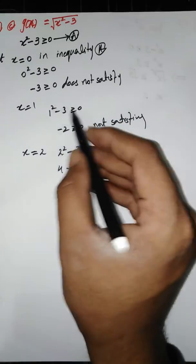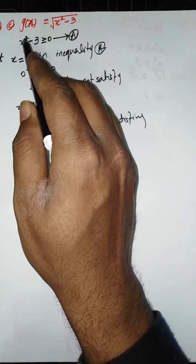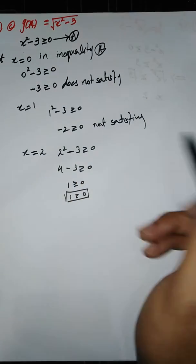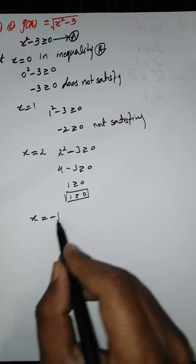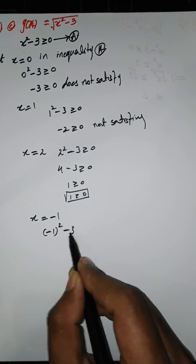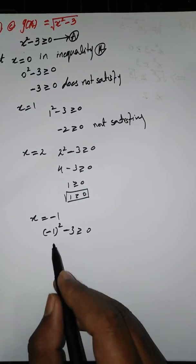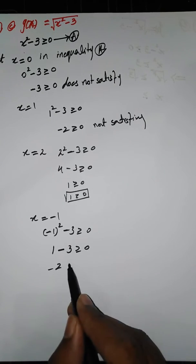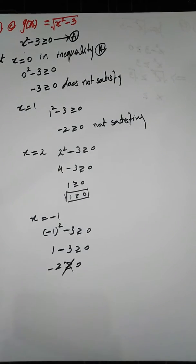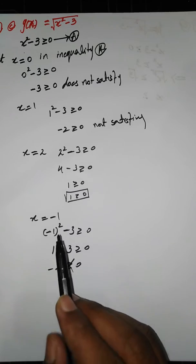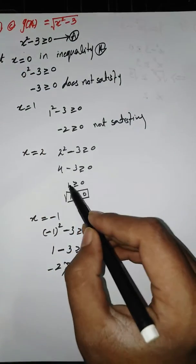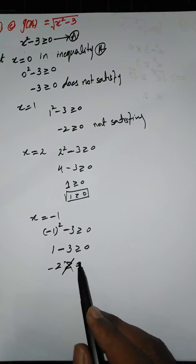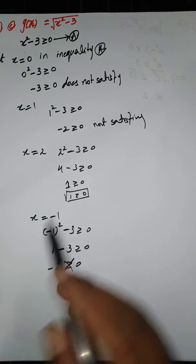Similarly, when we put X equals minus 1, the term becomes 1 minus 3, which equals minus 2, and minus 2 is not greater than 0, so it does not hold. When we put X equals minus 2, the square makes minus 2 become 4, and we get 4 minus 3 equals 1, so the inequality holds for X equals minus 2 as well.